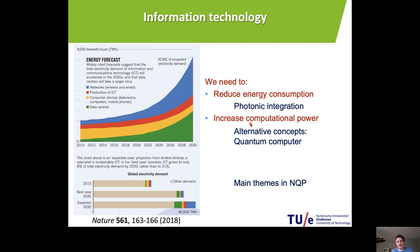The other trend is that we're using more and more computational power, and there are still some big challenges which we cannot address today. For instance, it is impossible with today's computers to calculate the full electronic structure of complex molecules like DNA or proteins. Another example is the climate — we do not have enough computing power to do a full calculation of the climate. Here we need alternative computational concepts, and one of these concepts is a quantum computer. These themes — photonic integration and quantum computation — are the main themes within this nano quantum photonics track.